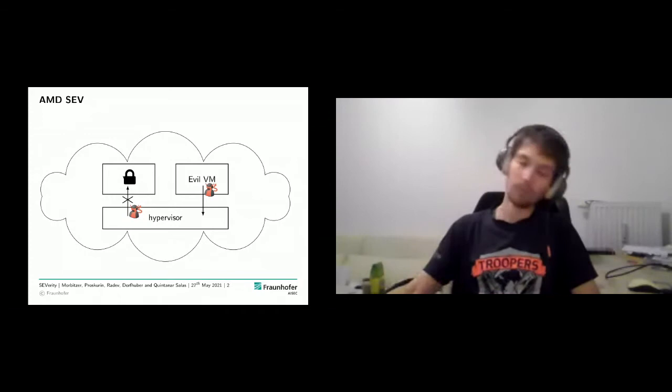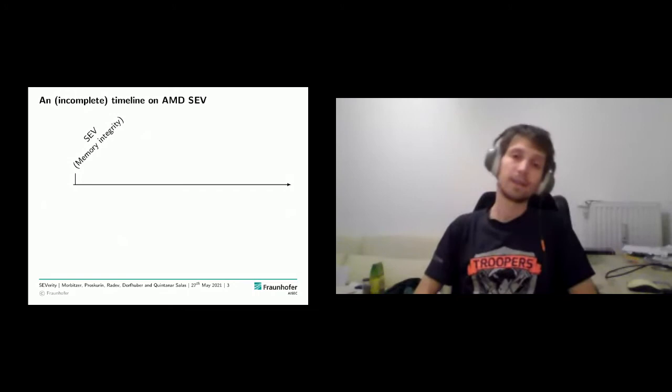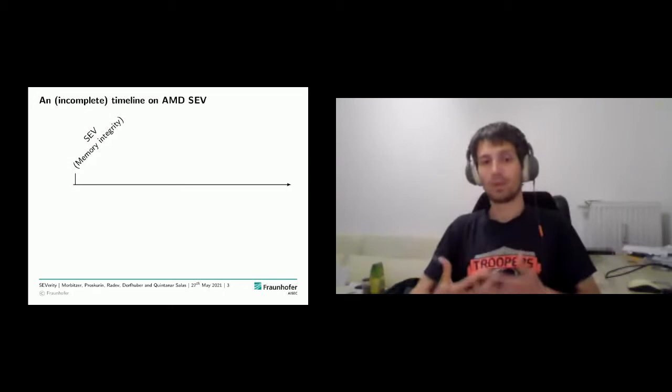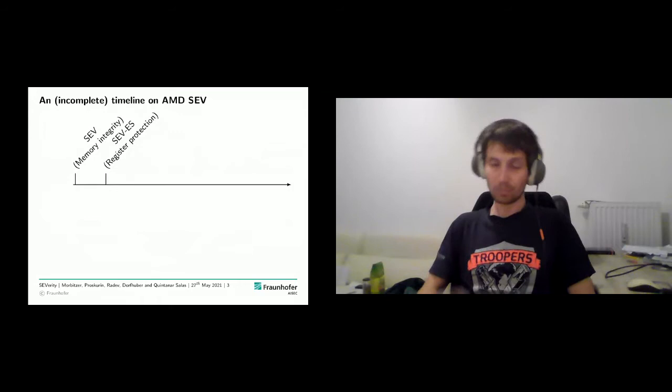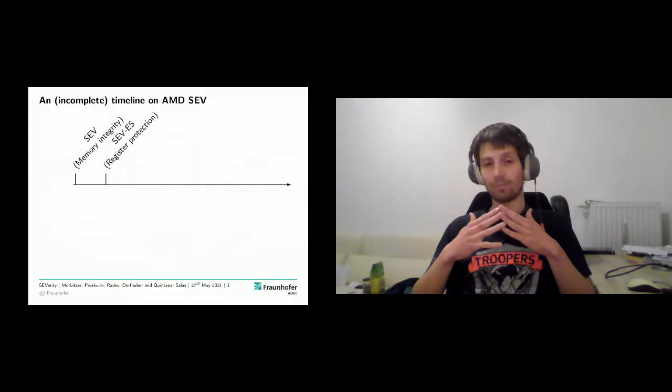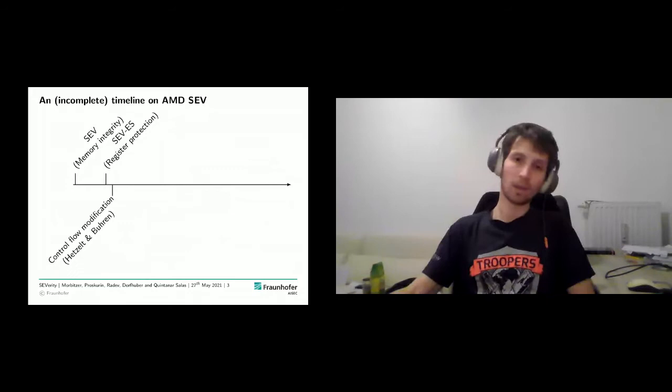Let's have a quick look at the timeline of AMD SEV. SEV was introduced, adding memory confidentiality to virtual machines. Afterwards came SEV-ES — Encrypted State — which additionally protects the VM's registers when the VM hands control back to the hypervisor, ensuring the hypervisor can't snoop on the VM's registers.